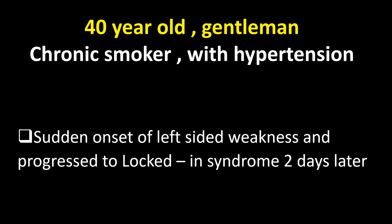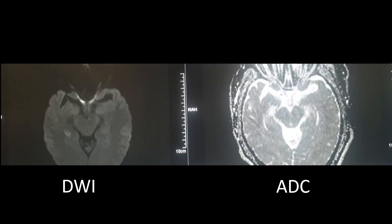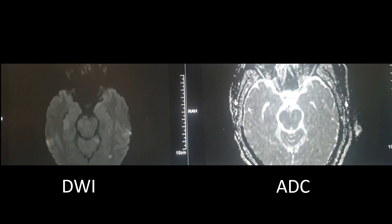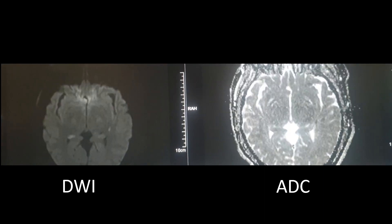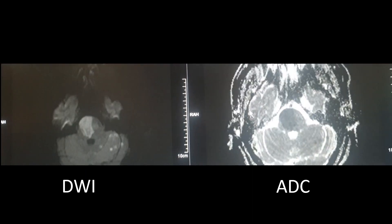Now let us practice with this case: a 40-year-old gentleman, a chronic smoker with hypertension, who presented with a sudden onset of left-sided weakness and progressed to locked-in syndrome two days later. Here is the DWI sequence on the left and the ADC map on the right. There are DWI hyperintensities with corresponding ADC restriction suggesting acute infarcts over the right hemipons extending to the left ventral pons. There are also signals in the right and left cerebellar hemispheres, more on the left, and in the left lateral thalamus and left inferior temporal region — all within the posterior circulation territory.